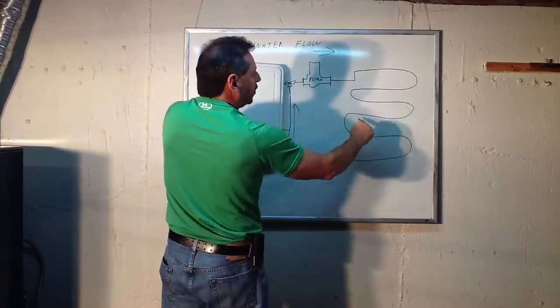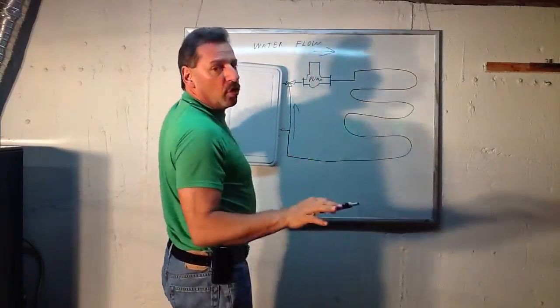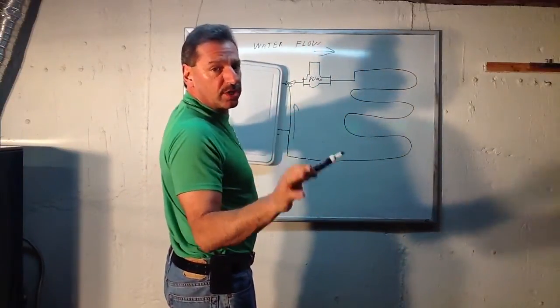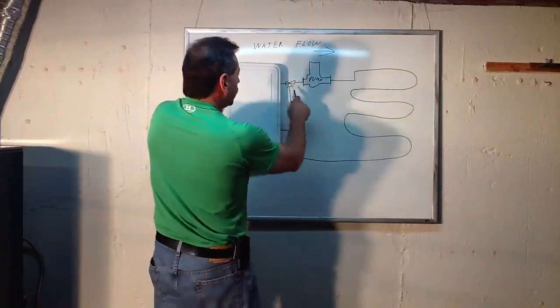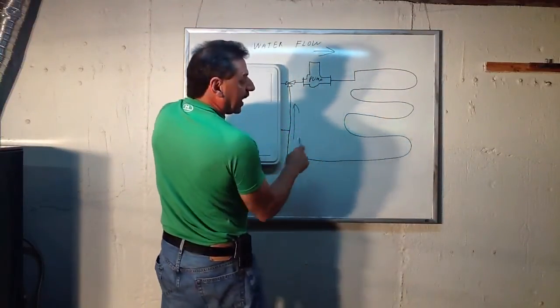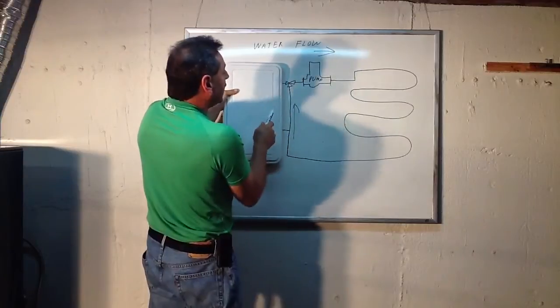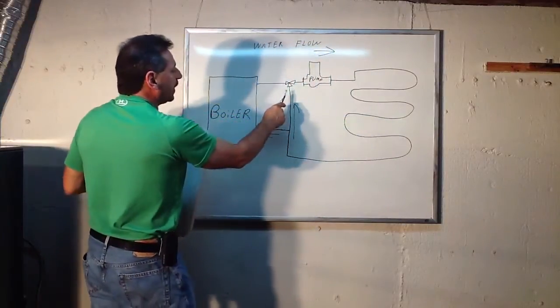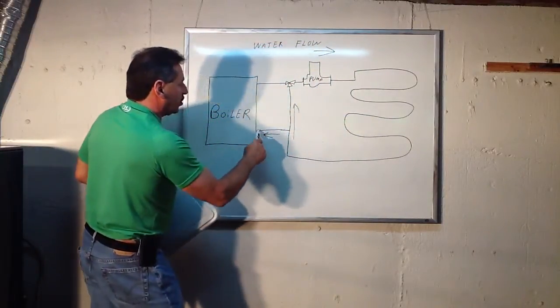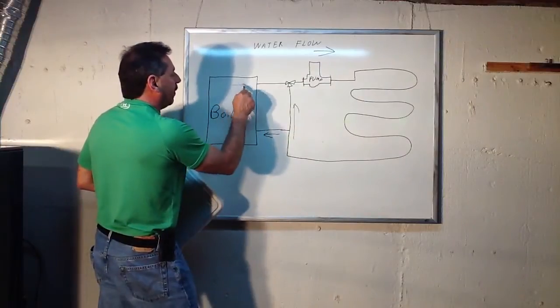Once the water starts losing its temperature and it gets too cool, this mixing valve senses that, opens up again and lets the water return into the boiler and takes it from there, from the boiler through the back.